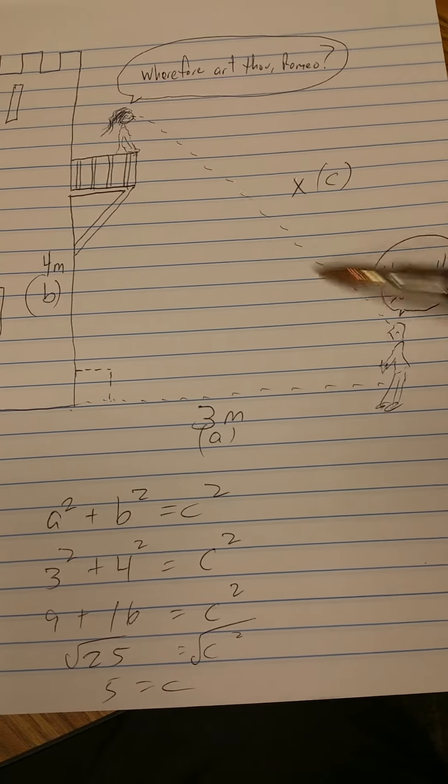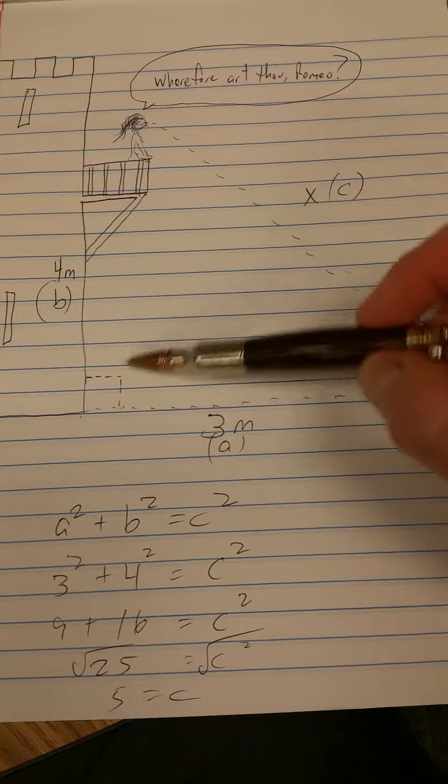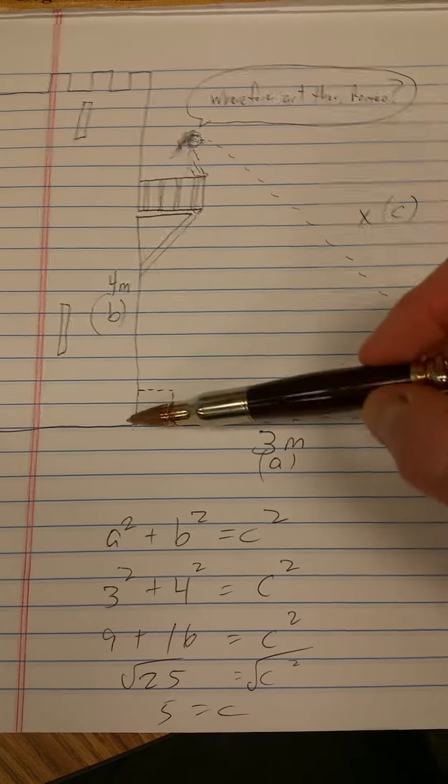So you have a triangle formed by Romeo and Juliet. It's a right angle. Here's the castle wall.